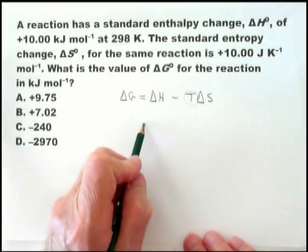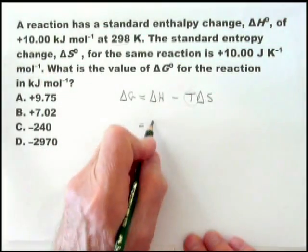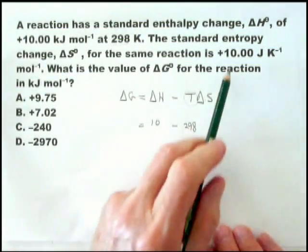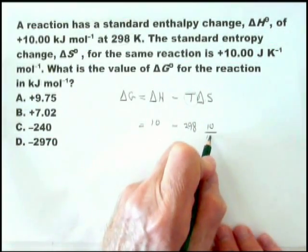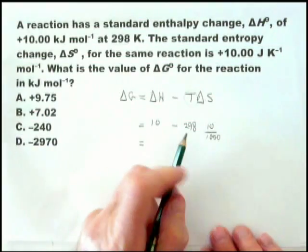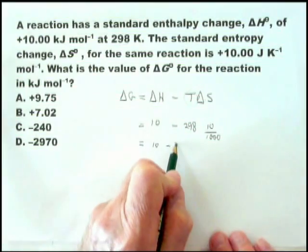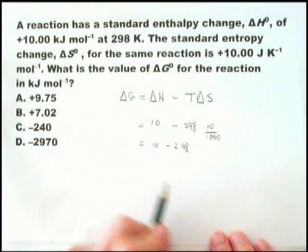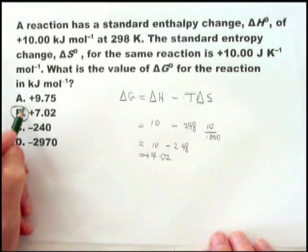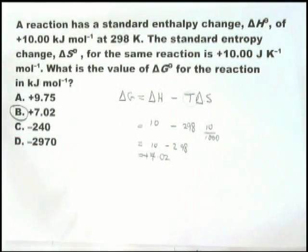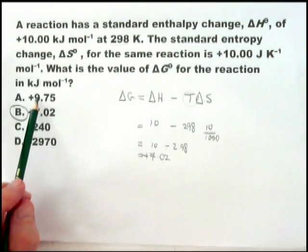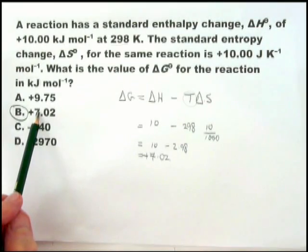Let's put these figures in. Delta G equals delta H, which is 10, minus 298 — that's the temperature — times delta S, which is 10 divided by 1,000. That clearly gives about 2.9, which equals 7.02, and it is positive. So you did need to do a calculation. You could have eliminated C and D, but you'd have to do the calculation to verify whether it's A or B.